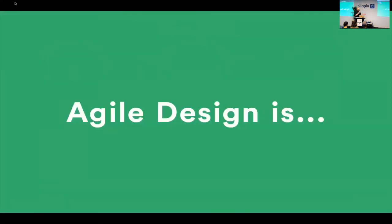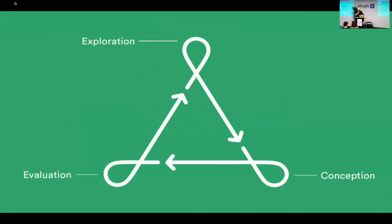Agile Design is a method that is user-centric, fast, iterative, and perfect for agility and lean in a startup. We represent it as a triangle with three steps. Each step is iterative, but all steps together create an affinity infinite loop. In this infinite loop you continuously improve your product. I want a really flexible method — if you want to start by conception it's possible, or if you want to start by evaluation it's possible.